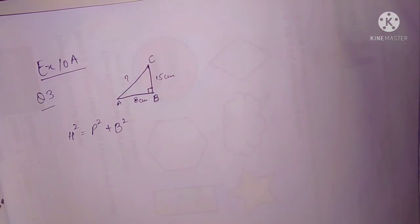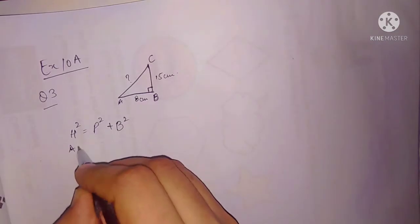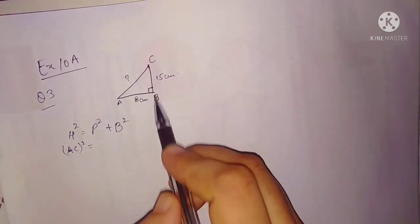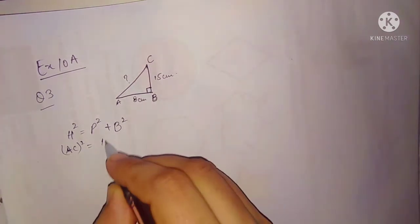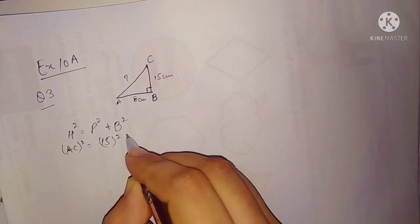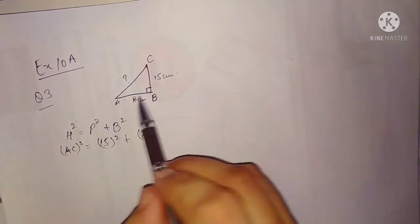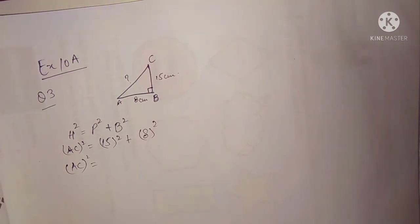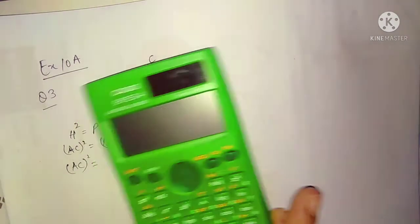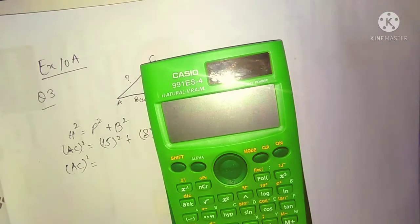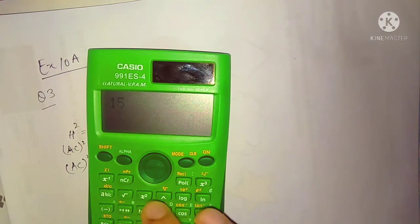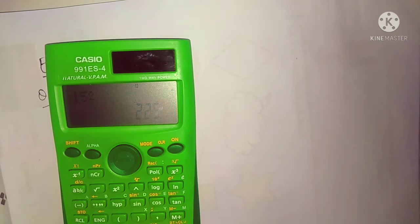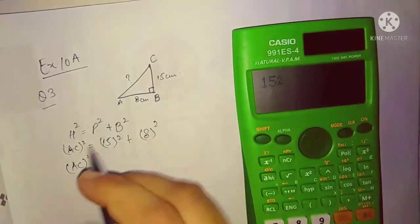We have to find the hypotenuse, which is AC. The perpendicular is given — the line which goes straight up is your perpendicular — that is 15. The base is 8. So AC squared is equal to 15 squared plus 8 squared. 15 squared equals 225.